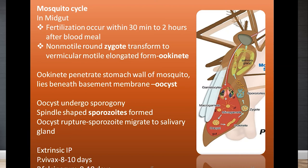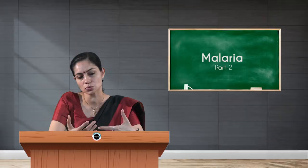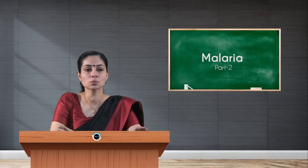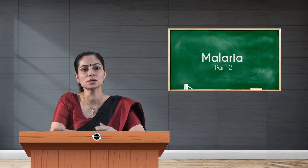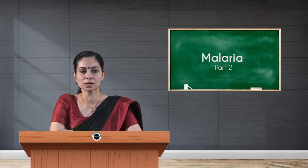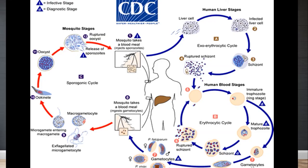This is the lifecycle of the malarial parasite inside the mosquito and inside the human body. The extrinsic incubation period is the time taken for the malarial parasite after entry into the mosquito to turn into sporozoites: 8 to 10 days for Plasmodium vivax and 9 to 10 days for Plasmodium falciparum. The parasite has two hosts: man is the intermediate host and the mosquito is the definitive host.